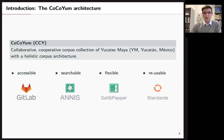In CoCoYum we try to solve some of these issues by making it collaborative and cooperative and using it as a holistic architecture that talks about accessibility. We use GitLab, we will show how this works. It's searchable with ANNIS and visualizable as well. We get lots of flexibility with Salt and Pepper who can convert to different formats. It's really cool. And with our standards that we developed specifically for this for Yucatec Mayan it is reusable.